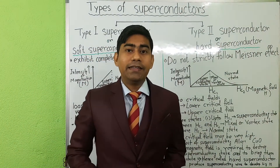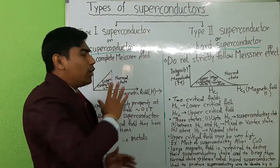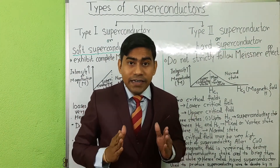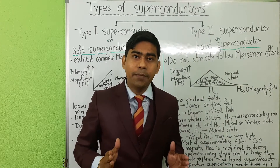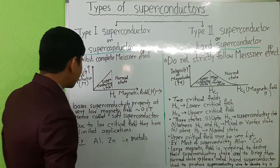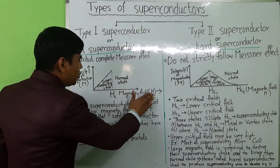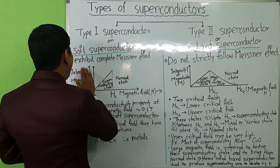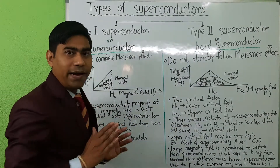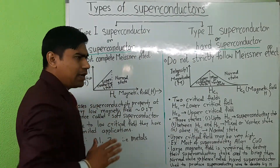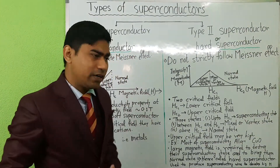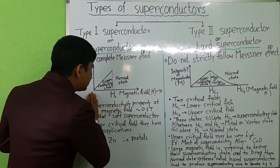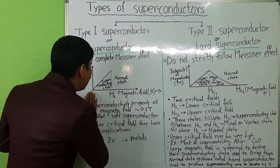To explain this type of superconductor, we first discuss the magnetization graph — that is, intensity of magnetization versus magnetic field graph. Here, along the x-axis we plot magnetic field H and along the y-axis we plot intensity of magnetization M, or more precisely, minus M. We will see that if we increase the magnetic field, magnetization increases.